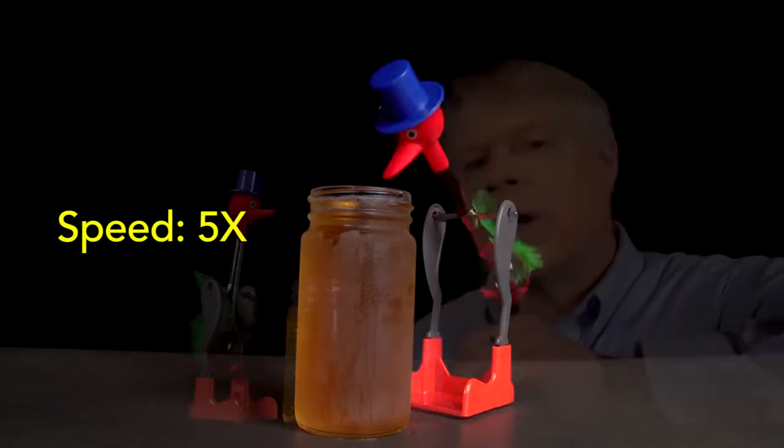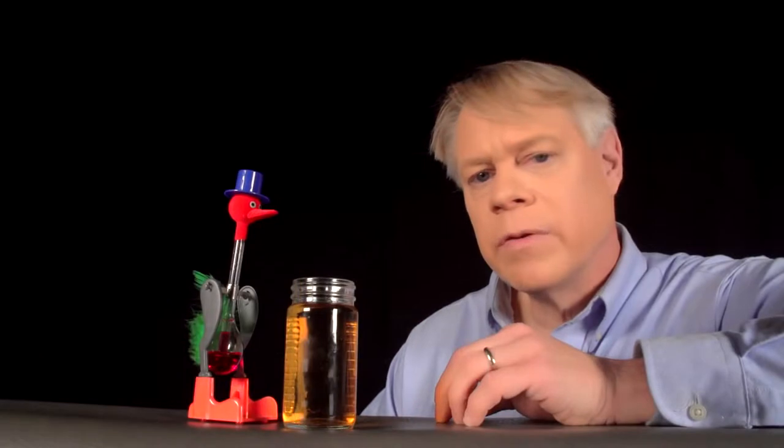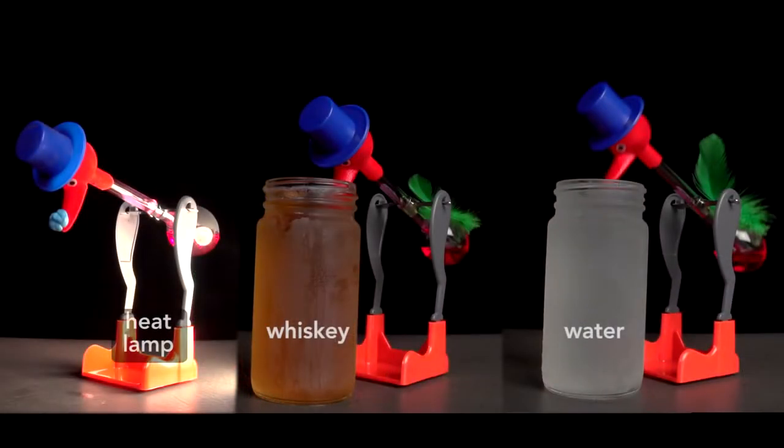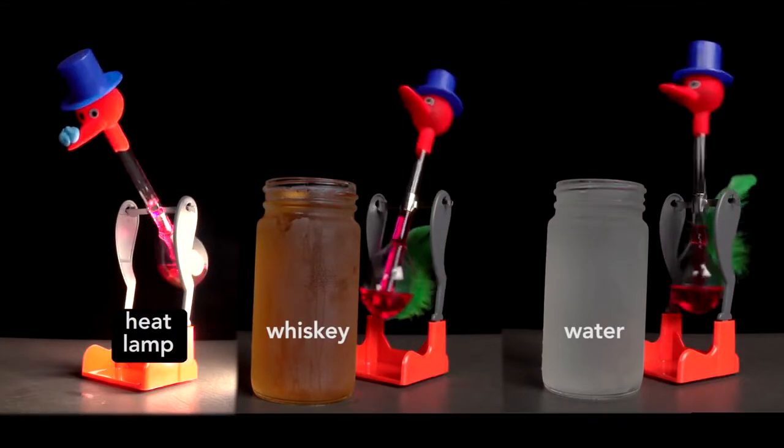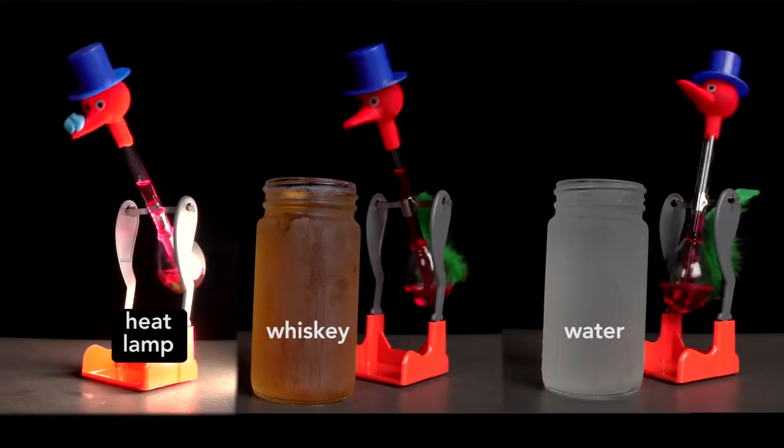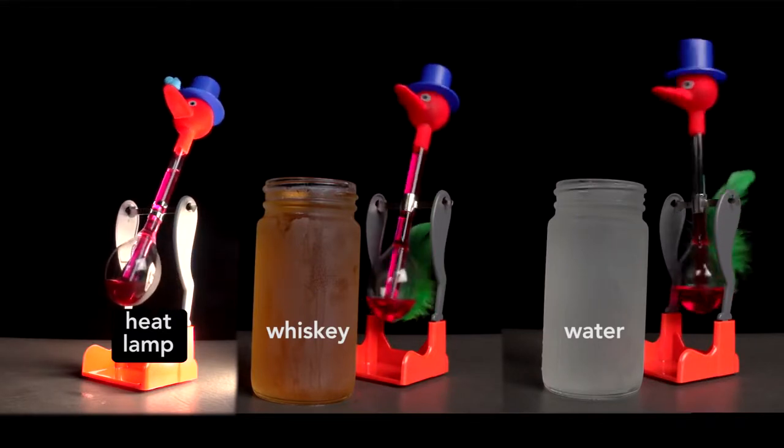We can also now understand why the bird's rate of drinking differs among the three methods I used to activate the bird—a heat lamp, whiskey, and water. Roughly, the heat bird takes three drinks for every one of the water bird. The whiskey bird takes two for every drink of the water bird.